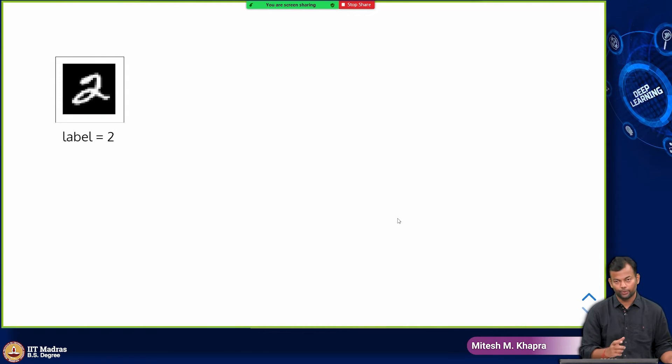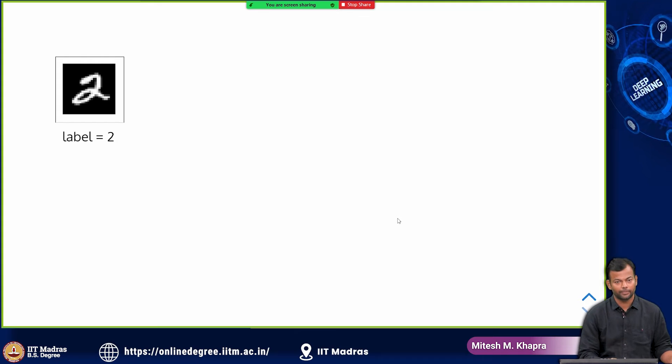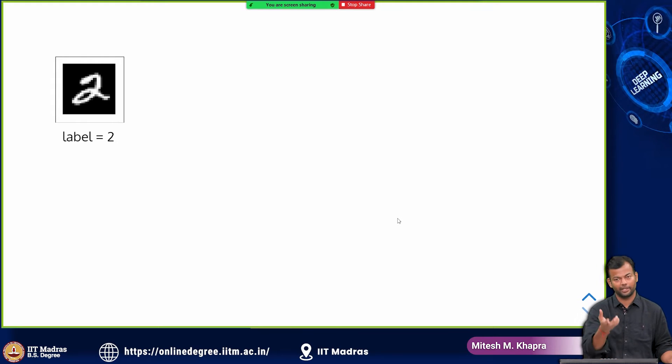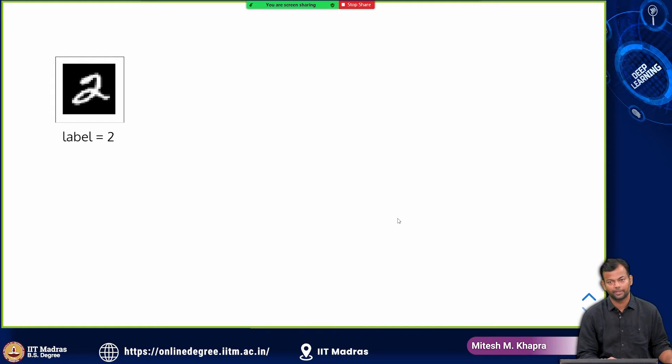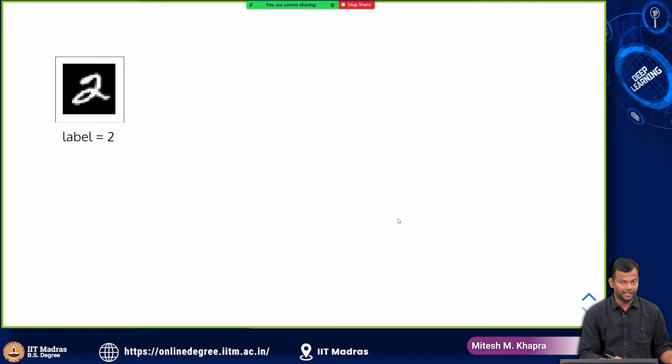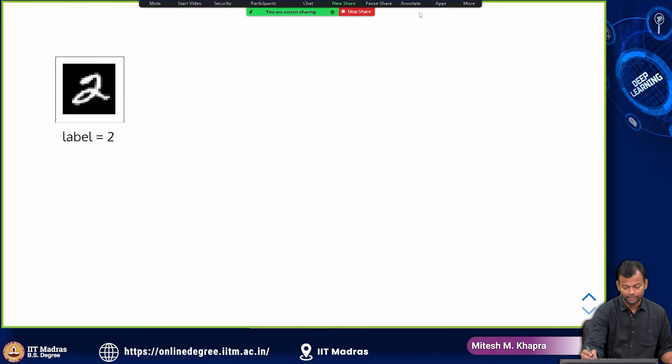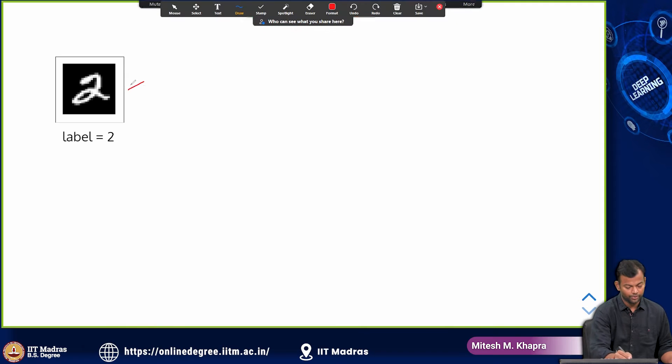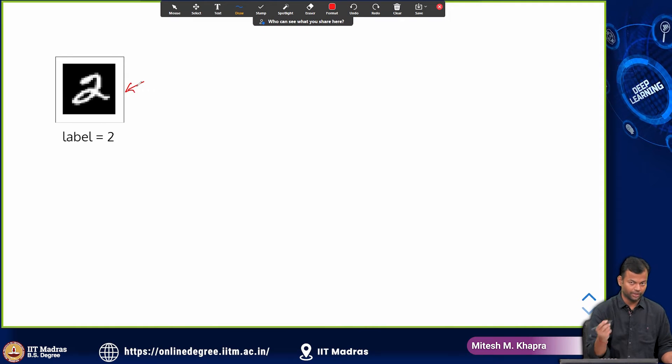In data set augmentation this is what you do. Suppose your training data set was about digit classification, and many of you would have experimented with the MNIST data set. These are some images given in the MNIST data set. This is say one of the images that was given and whose label is of course 2. So this is the digit 2.